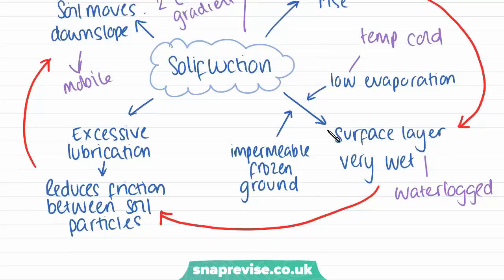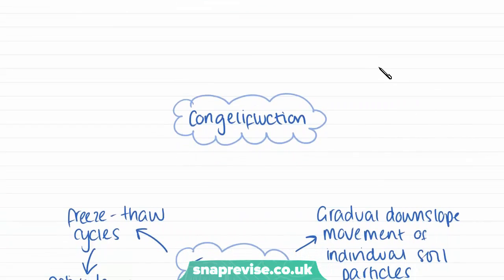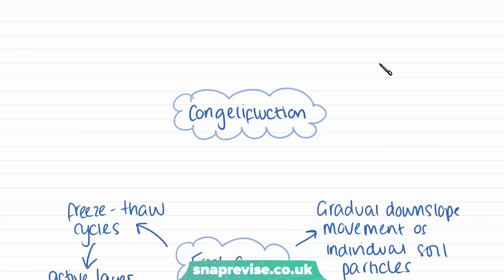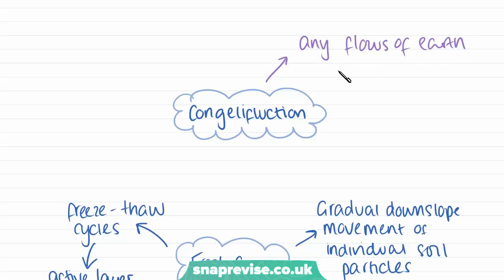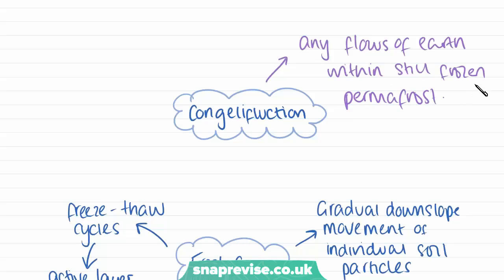Our next mass movement process is congellifluction. This relates to any flows of earth within the still frozen parts of the permafrost. That is simply all we need to know about congellifluction — just that definition.